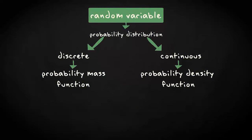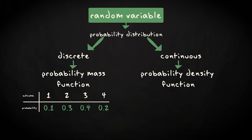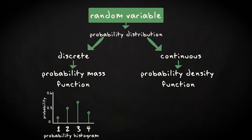For discrete random variables, it is easy to see how the probabilities can be listed for every possible outcome. Suppose a variable x can take the values 1, 2, 3, or 4. Then the following table lists the probabilities with each outcome. This distribution may also be described by a probability histogram, exactly the same as what you would do with a frequency table and a frequency histogram.